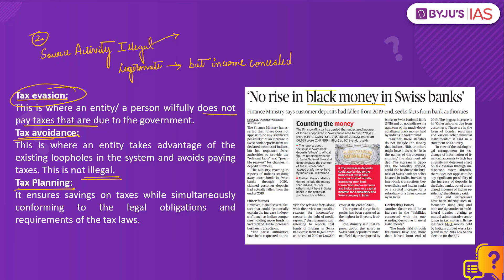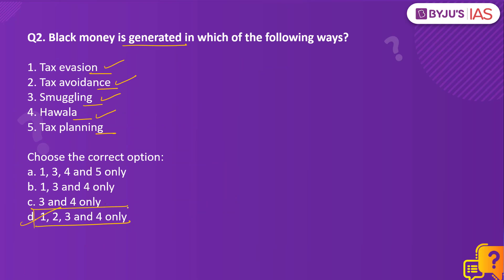However, tax avoidance is not illegal. Coming to tax planning: tax planning is saving upon taxes while simultaneously conforming to the legal obligations and requirements of the tax laws of your country. For example, Section 80D of the Income Tax Act allows taxpayers to claim deductions for health insurance premiums paid. This is an example of tax planning as it allows you to pay the lowest taxes possible, and legally. So the right answer is option D — 1, 2, 3 and 4 only — and tax planning does not generate black money.